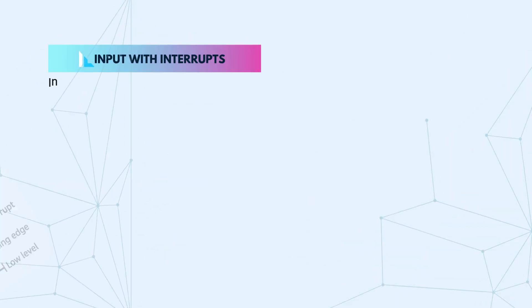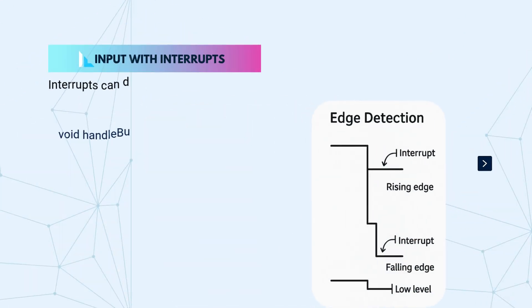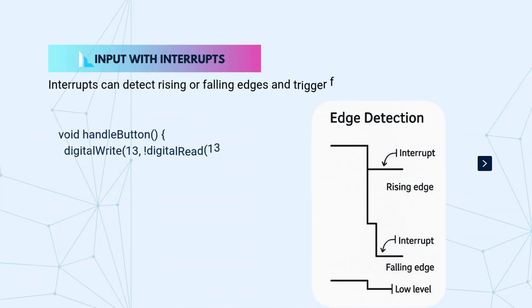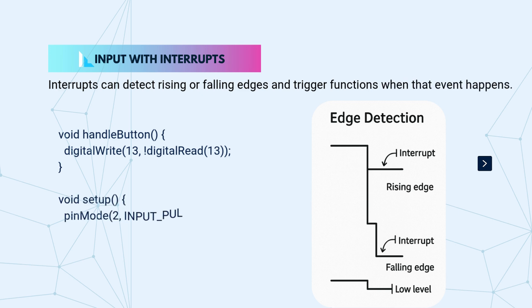Instead of constantly checking the button, we can use interrupts to handle input more efficiently. Interrupts can detect rising or falling edges and trigger functions when that event happens.